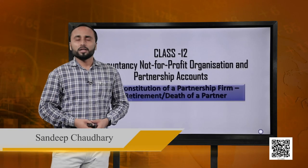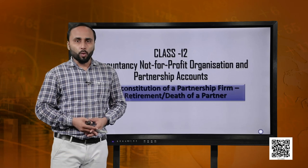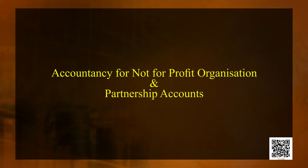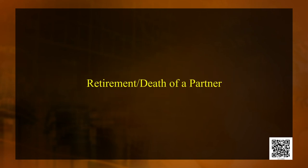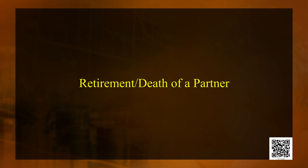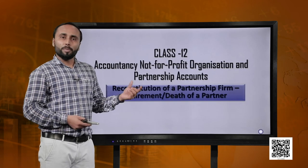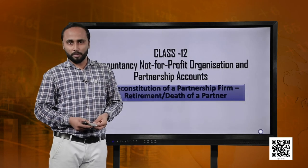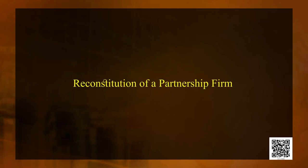Today we are going to start Chapter 4 of your accounting book, which is accountancy for not-for-profit organizations and partnership accounts. Chapter 4 is retirement or death of a partner. As you can see, this chapter is also a part of the same concept that you've learned in the previous chapter, which is reconstitution of a partnership firm.